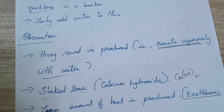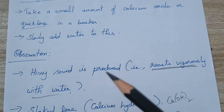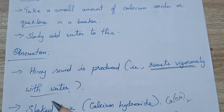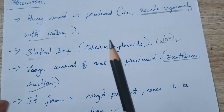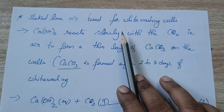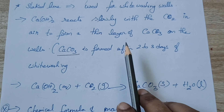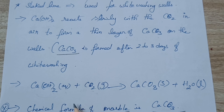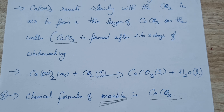So what are the observations when you do Activity 1.4? When you put quicklime in the beaker, it vigorously reacts — you know this because of the hissing sound and bubbles coming immediately. The product is slaked lime — only one product is formed, so it is an example of a combination reaction. A large amount of heat is produced, so it is also an example of an exothermic reaction. Slaked lime used for whitewashing reacts with CO2 in the air to form calcium carbonate CaCO3, which looks shiny — and the chemical formula of marble is also CaCO3.